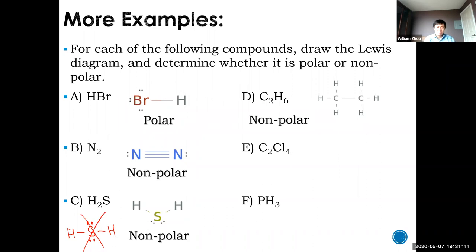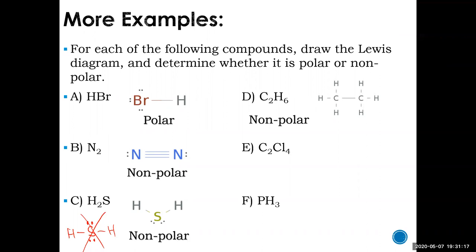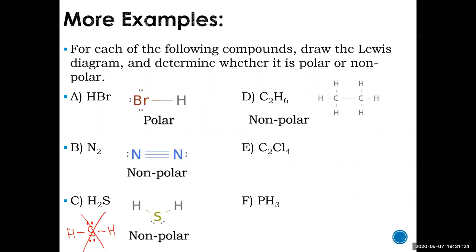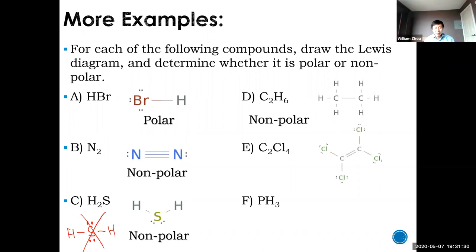C₂Cl₄: if you actually draw it out, it's nonpolar because it's perfectly symmetric — you can draw two lines of symmetry, and all bond angles are 120 degrees. Despite the electronegativity difference between chlorine and carbon, the symmetry cancels it out. So C₂Cl₄ is nonpolar.